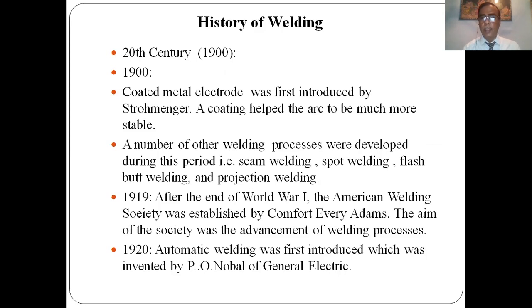In the 20th century, from 1900 onwards, the coated metal electrode was first introduced. A coating helps the arc to be much more stable and increases the arc forces. A number of other welding processes were developed during this period: seam welding, spot welding, flash butt welding, and projection welding. In 1919, after the end of the First World War, the American Welding Society was established by Concord Avery Adams, with the aim of advancing welding processes.